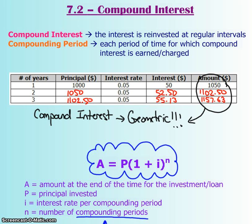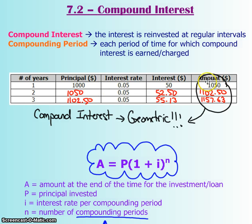Here's an example — the exact same one from the previous video, so you can compare the two and see the difference. We have the same amount invested and the same interest rate. Multiplying them together gives $50 as your reward. At the end of the year, your principal plus interest equals $1,050. Now instead of using $1,000 again as your principal, we use the new amount of $1,050, so that additional $50 also earns interest. That gives $2,050.